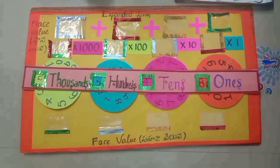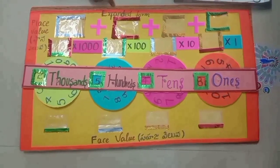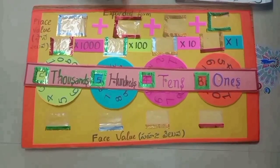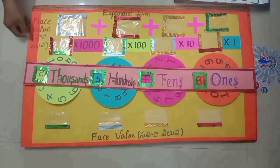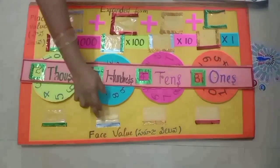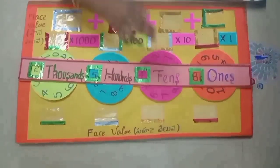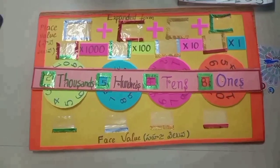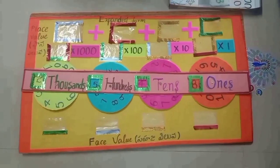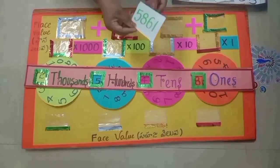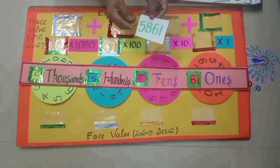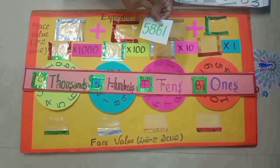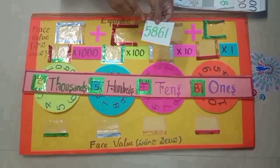This is a math theorem to explain to students what is the expanded form, place value, and face value. For example, we take the number 5861.